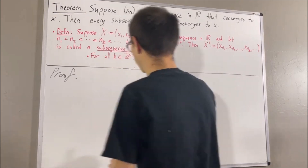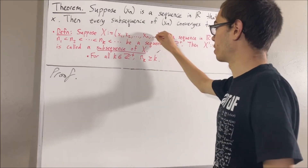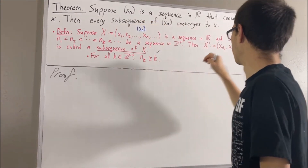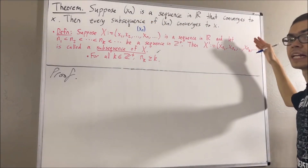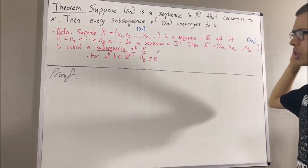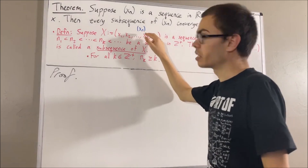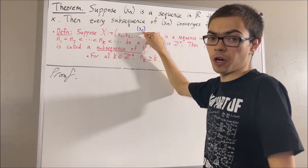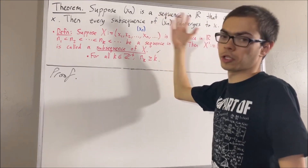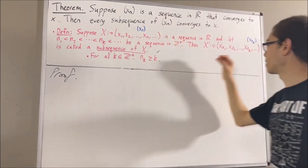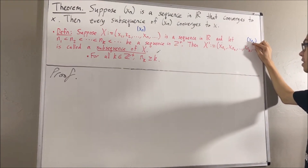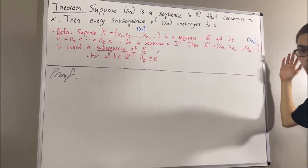Sometimes we like to denote the original sequence by xn in parentheses, and the subsequence by xnk in parentheses. You can think of it as: in the first case, n is our variable, so we go x1, x2, x3, and so on. While in the second case, k is our variable, so it goes xn1, xn2, xn3, and so on and so forth.